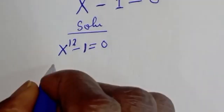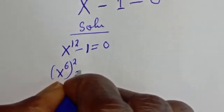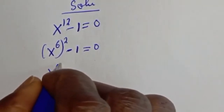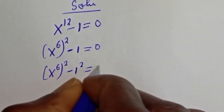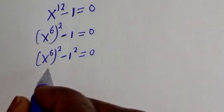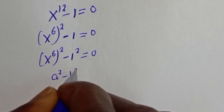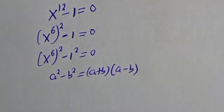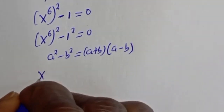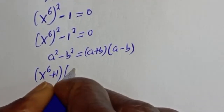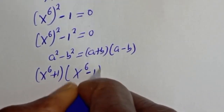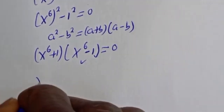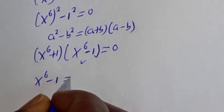Now, s raised to power 12 can be written as s raised to power 6, squared, minus 1 is equal to 0. This is the same thing as s raised to power 6 squared minus 1 squared is equal to 0. If you look at this, this is in the form of a perfect square — a squared minus b squared is equal to a plus b bracket a minus b. Substituting, we get s raised to power 6 plus 1 bracket s raised to power 6 minus 1 is equal to 0. We can still express this as s raised to power 6 minus 1 is equal to 0.